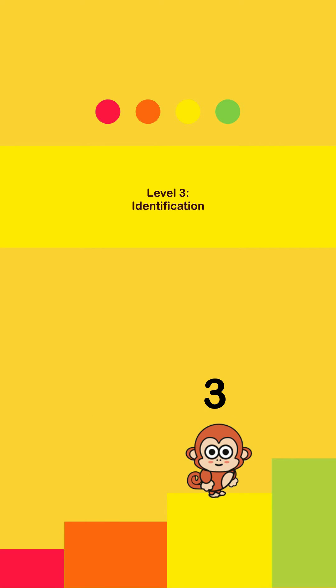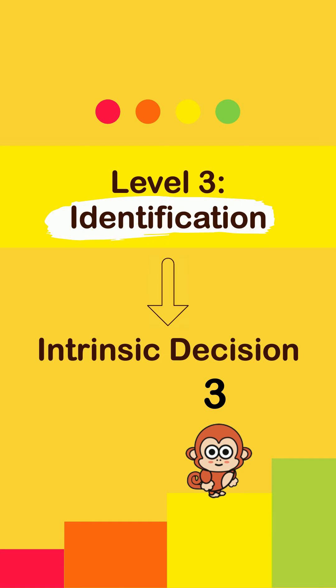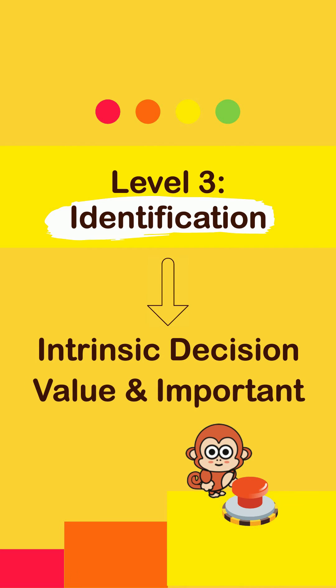The third level is identification, and is the first level where we do something for ourselves because we value the goal or find it somewhat important.